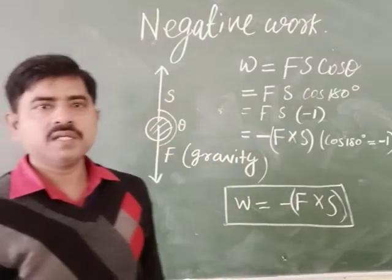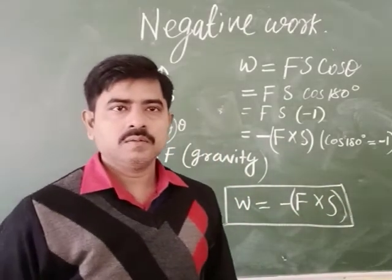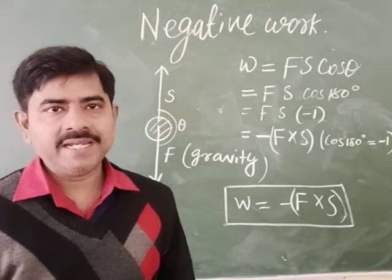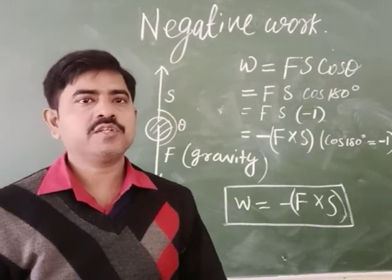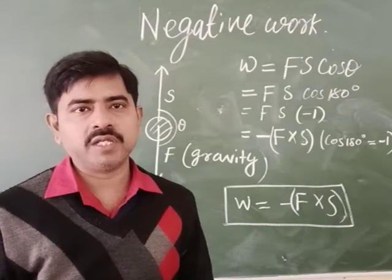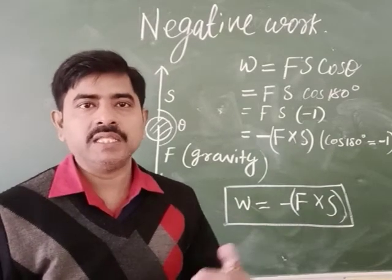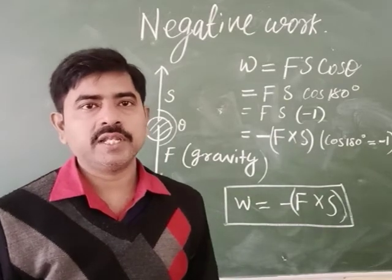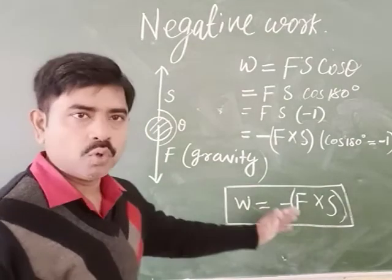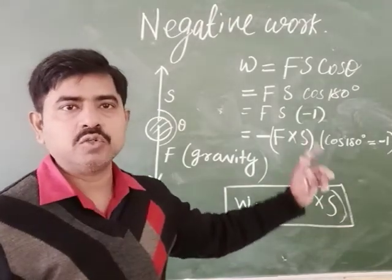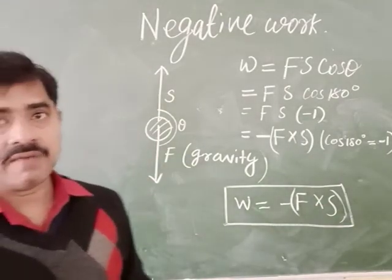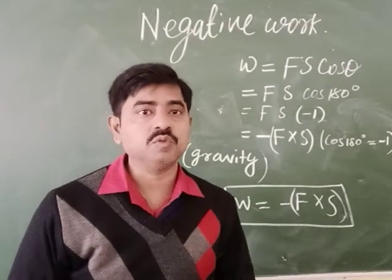So what we have seen here: when the displacement of the body takes place in the direction opposite to the direction of the applied force, then the work done by the force is said to be negative — as in the case of gravity acting on an object which is moving up.